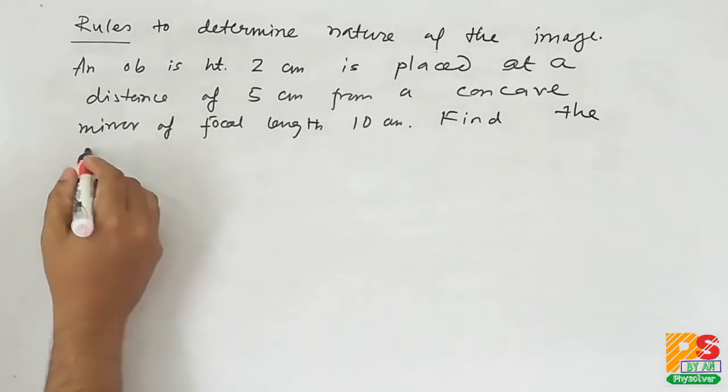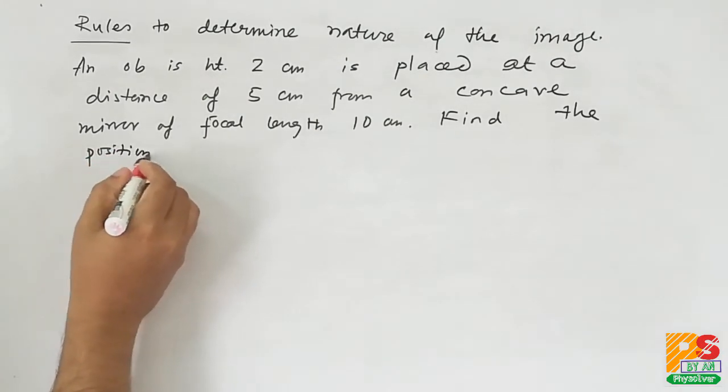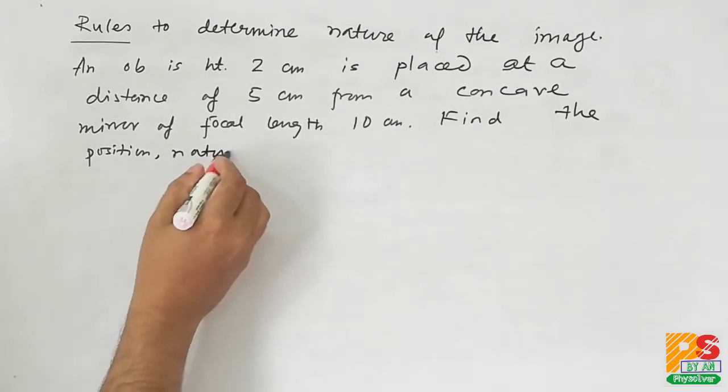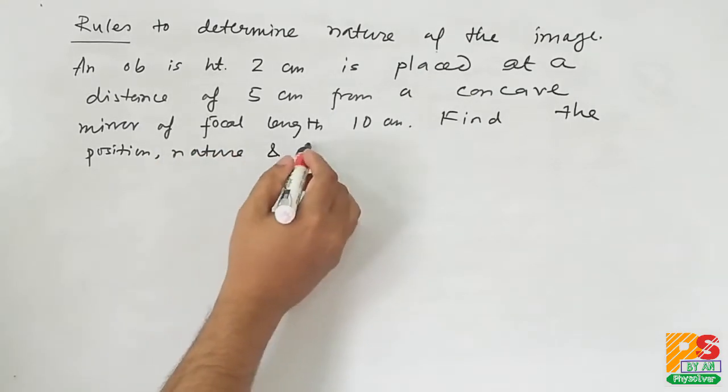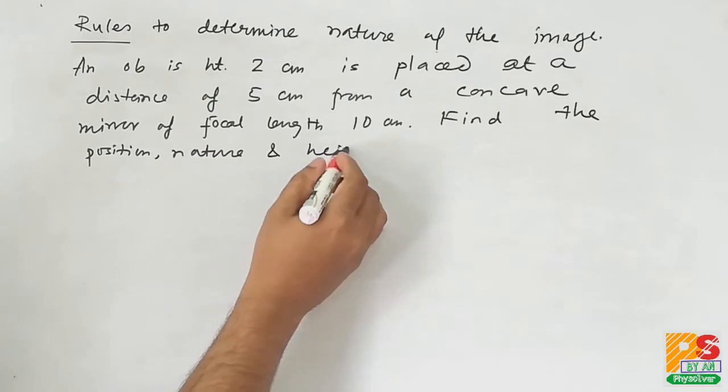We have to find the position, i.e. the distance of the image from the pole of the mirror, next nature and height of the image formed.